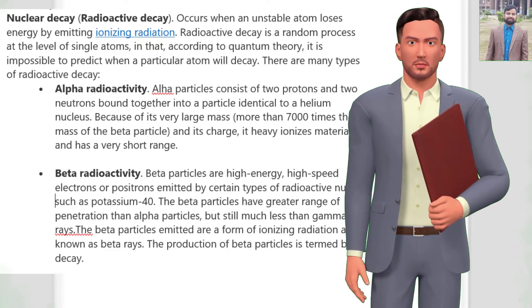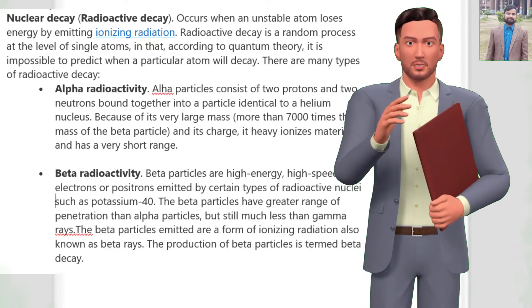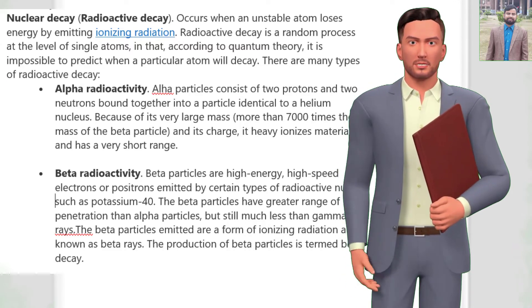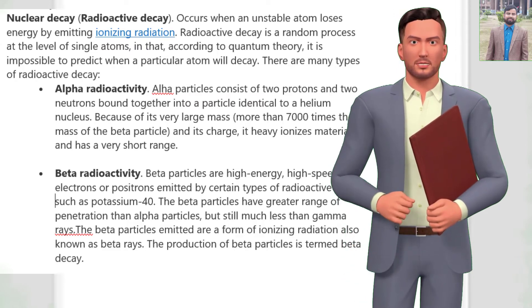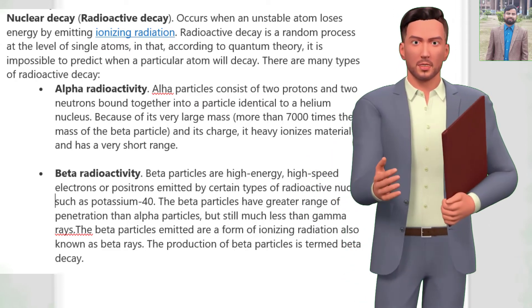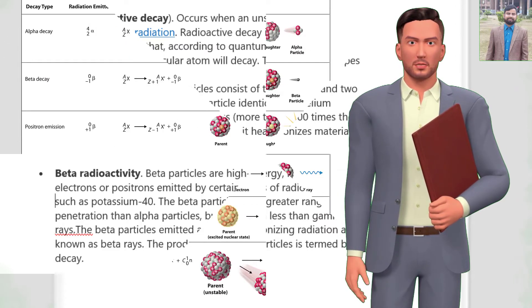Alpha radioactivity: alpha particles consist of two protons and two neutrons bound together into a particle identical to a helium nucleus. Because of its very large mass, more than 7,000 times the mass of the beta particle, and its charge, it heavily ionizes material and has a very short range.